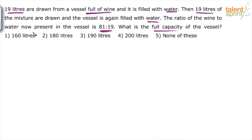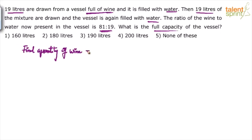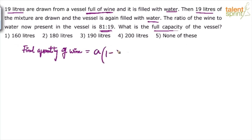If you had gone through that video, you would know the formula we discussed there. Always in such cases, initially we start with only one item — like here we have only wine. The formula goes like this: final quantity of wine equals a times (1 minus b over a) whole to the power of n.